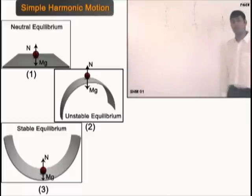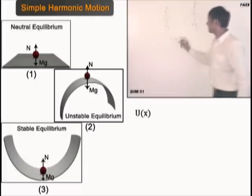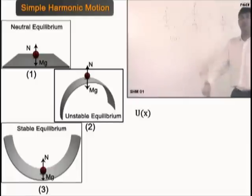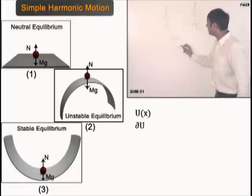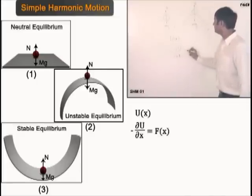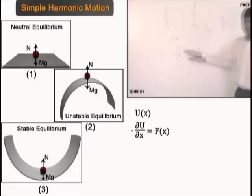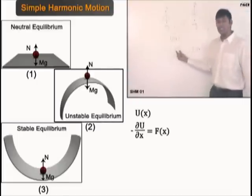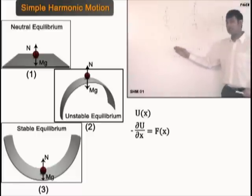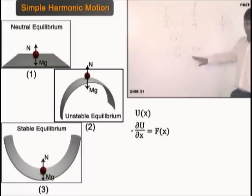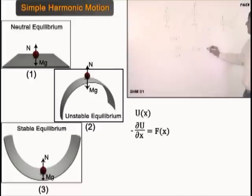So sometimes, given a potential energy-position graph u(x), where a body is free to move along x — where will be the equilibrium position? Do you know that du/dx gives us the force in the x direction? The partial derivative of u with respect to x: if I change x by a small amount and find the change in potential energy, that ratio gives me the force — since change in potential energy equals F·dx. So if I find du/dx and equate it to zero, x at that point will be the equilibrium position where net force is zero.